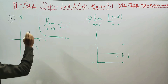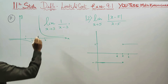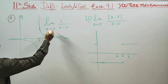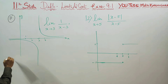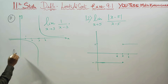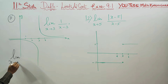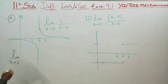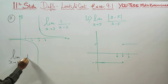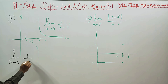First of all, to find the limiting case when x approaches 3, you have to first find the left-hand limit. The limit as x turns to 3 from the left side — you can first find this left side limit.